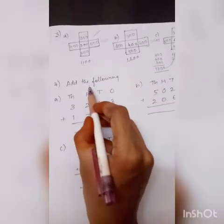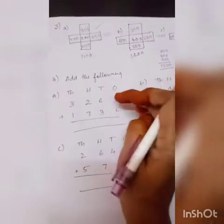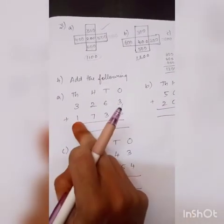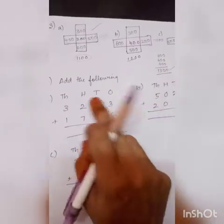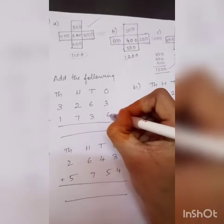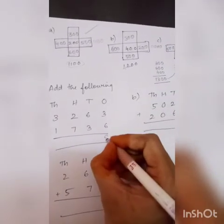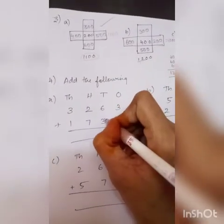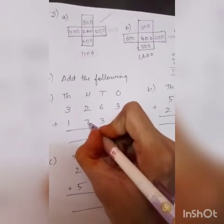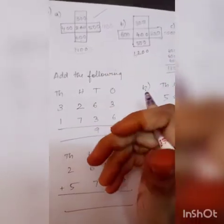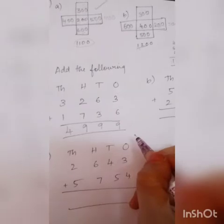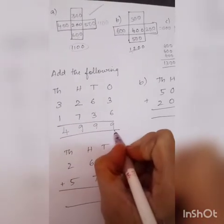Next is your fourth question - Add the following. What is the A question? 3,263 plus 1,736. We start from the right side. 3 plus 6 is 9. 6 plus 3 is 9. 2 plus 7 is 9. 3 plus 1 is 4. So the answer is 4,999.